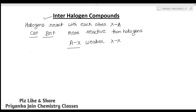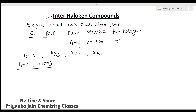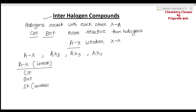Interhalogen compounds can be divided into four categories: AX, AX3, AX5, and AX7. AX type compounds are linear. Examples include ClF, BrF, IF (which is unstable), BrCl, ICl, and IBr.